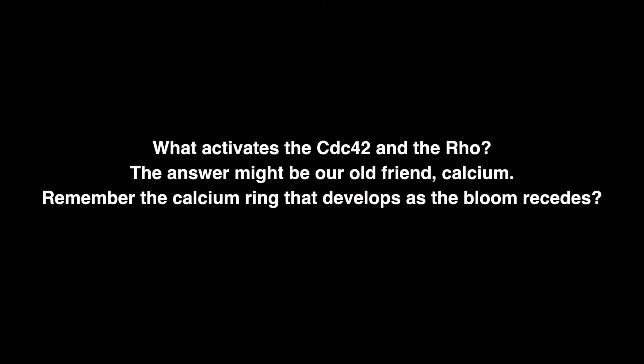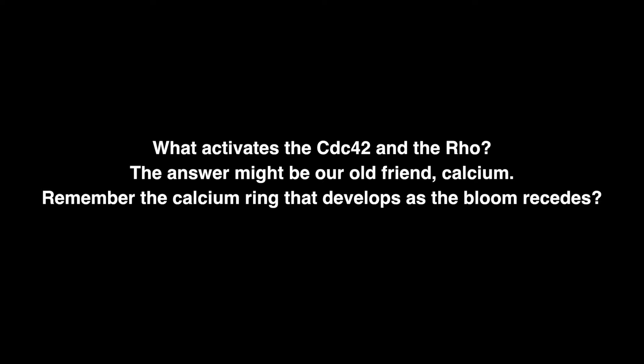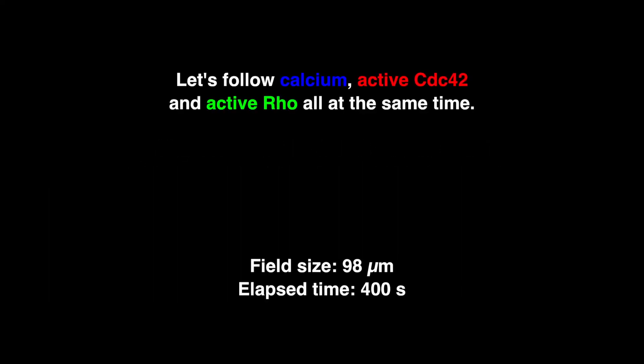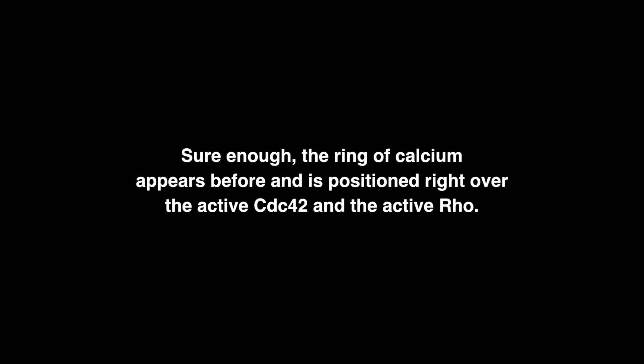What activates Cdc42 and Rho? The answer might be our old friend calcium. Remember the calcium ring that develops as the bloom recedes. Following calcium, active Cdc42, and active Rho all at the same time, sure enough, the ring of calcium appears before and is positioned right over the active Cdc42 and the active Rho.